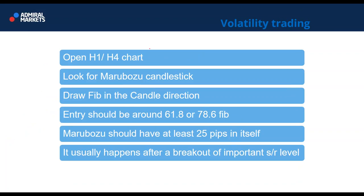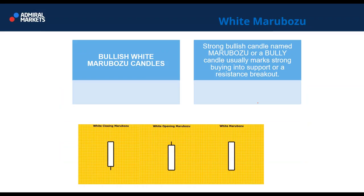How to make volatility trades: this is a very simple method in our Price Action Trading School approach based on naked charts and Fibonacci. Open a one-hour and four-hour chart, look for a Marubozu candlestick, draw Fibonacci in the candle direction, entry should be around 61.8 or 78.6, and the Marubozu should have at least 25 pips in itself. It will usually happen after a breakout of an important support or resistance level.